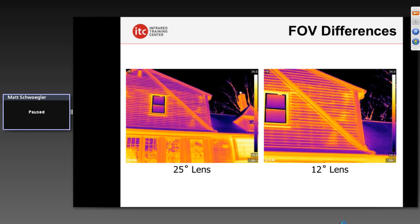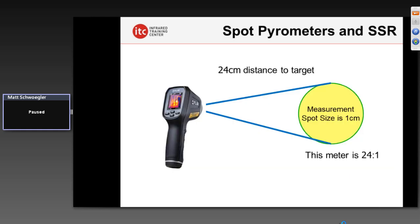Understanding field of view differences between types of lenses is very important. If you're in the market for an infrared camera and are new to the technology, this is something to consider. Are you looking at things typically further away — larger buildings, residential or commercial facilities, or utility work? You might want to invest in a telephoto lens, a 12-degree lens, to put on your infrared camera so you can capture more detail from a greater distance. That can be a really important consideration when purchasing a camera.